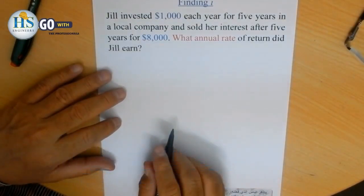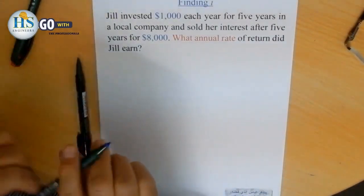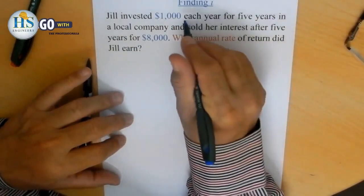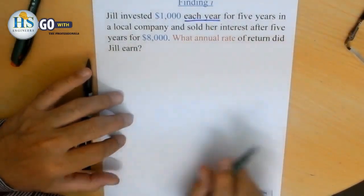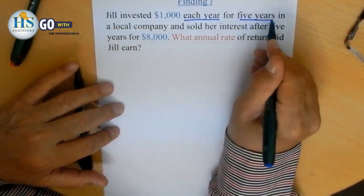The problem says Jill invested $1,000 each year for 5 years. So every year she put in $1,000 for a duration of five years.